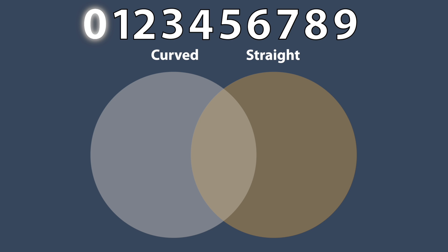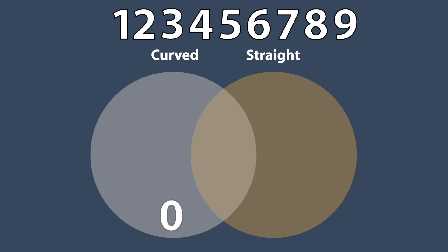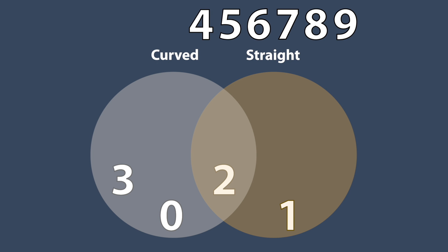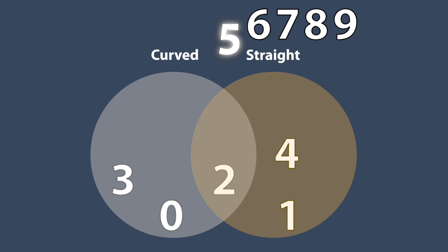0 is made with a curved line, so it goes in the left circle with the curved numbers. 1 is a straight line, so it goes in the right circle. 2 is drawn with a curved line and a straight line, so it goes in the overlapping part. 3 has no straight lines, so it goes in the left circle. 4 is drawn with two straight lines, so it goes in the right circle. 5 is drawn with two straight lines and a curved line, so it goes in the overlapping part.